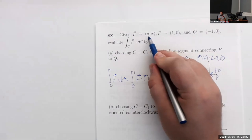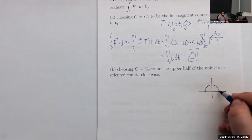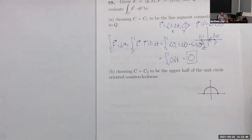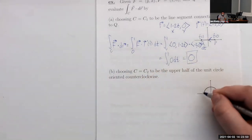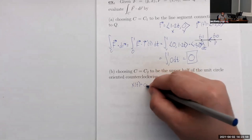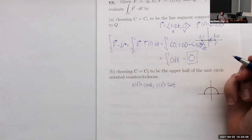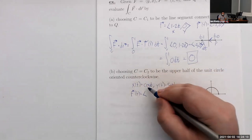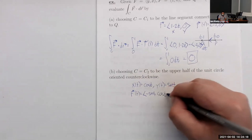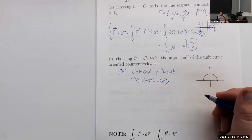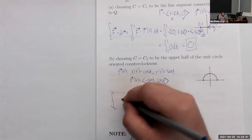Now let's suppose we go along a different path — still from P to Q but along the upper semicircle. Let's see if the line integral is the same. For the upper semicircle, x(t) = cos t and y(t) = sin t going from t = 0 to t = π. So r′(t) = (−sin t, cos t). The vector field f = (y, x) evaluated along the parameterization gives (sin t, cos t).